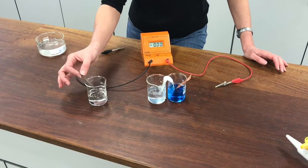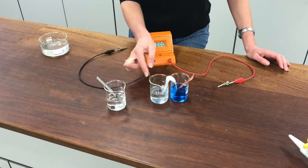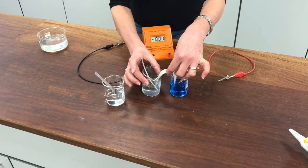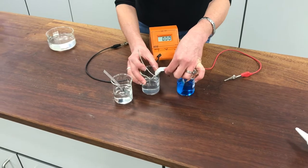I'm now going to repeat the experiment using a zinc half cell rather than the magnesium half cell. Now I probably ought to put a new salt bridge in there, but I'm going to be lazy and cheeky and try and get away without doing that.